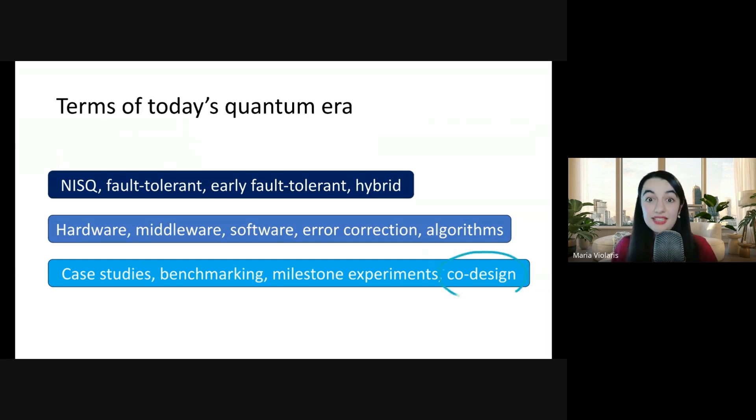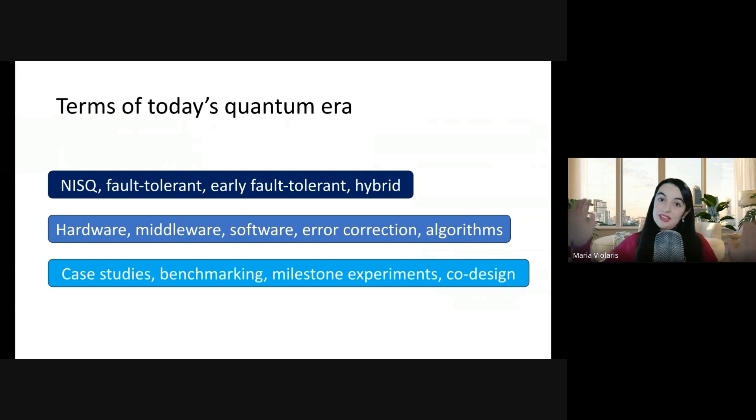Finally an important idea at the moment is co-design. That's the idea of combining the knowledge in all these different areas together to try and get the most out of today's quantum computers and the ones in the near future as possible. Thinking about an algorithm together with error correction together with the hardware and the software thinking about how to optimize all those different parts to work together. That needs lots of communication between people working on those different parts.